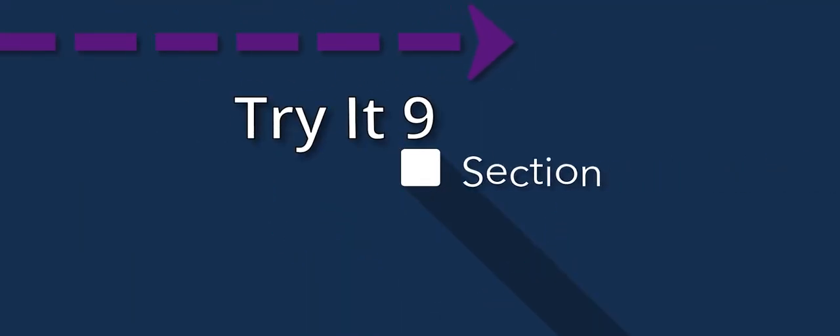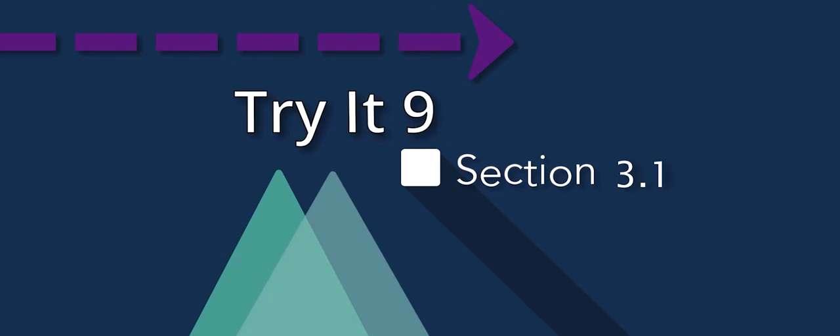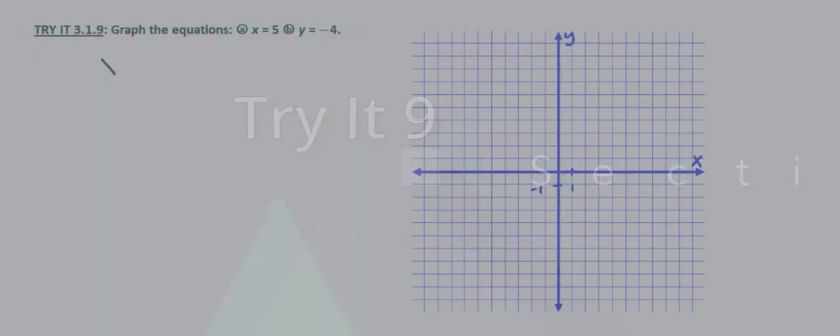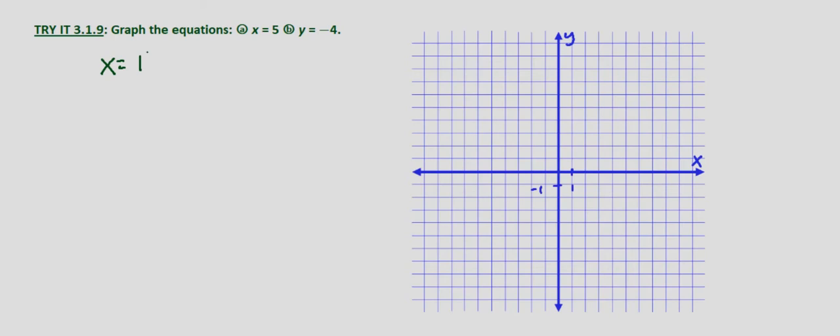So in this problem we're looking at graphing horizontal and vertical lines. Anytime we have x equals some number, that yields a vertical line at the number. Anytime we have y equals some number, that equals a horizontal line at the number.